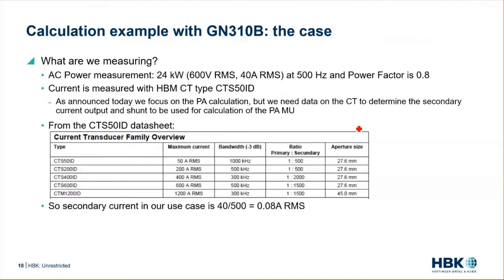Let's take a look at our use case. What are we measuring? We are measuring AC power: 24 kilowatts at 600 volts and 40 amps RMS, at a frequency of 500 hertz and a power factor of 0.8.